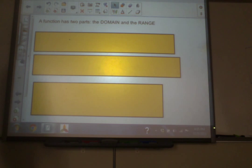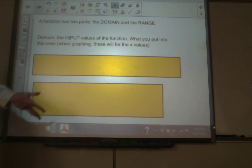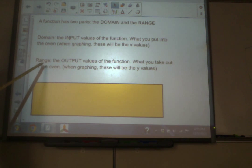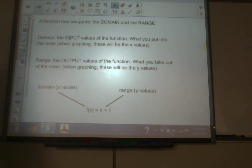As I mentioned a minute ago, a function has two parts, domain and range. The domain is the input. What do you put into the oven or into the function machine? When you're graphing, this is going to be the x. Range is the second part. It's the output. What comes out of the machine or out of the oven? When you're graphing, that will be the y. And here we can see, again, this left side, this f(x) part, that's the domain. And then the right side of the equation, that's the range. That's what came out of the function.